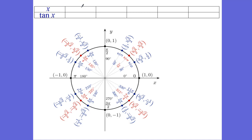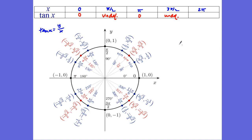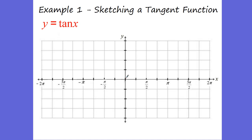For tangent, we're going to go back to our 0, our pi over 2, our pi, our 3 pi over 2, and our 2 pi. Remember, tangent of x is equal to y over x, or sine over cosine. So at tangent of y over x, 0 over 1, we end up getting 0. So at 0 we're at 0. But at pi over 2 we're going to be 1 over 0, which is undefined. At pi we're back to 0. Then undefined again, and then back to 0.